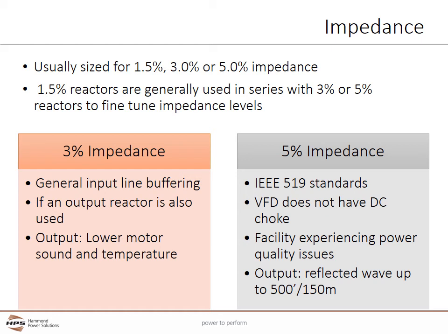Line reactors are usually sized for 1.5%, 3%, or 5% impedance in North America. Other values may be more typical in other parts of the world. 1.5% reactors are generally used in series with 3% or 5% reactors to fine-tune impedance levels and are rarely used separately. Select 3% impedance for general input line buffering. If an output reactor is also used, a 3% line reactor should be considered due to the total voltage drop of two line reactors. 3% line reactors can be used on the VFD output to lower motor sound and temperature rise.